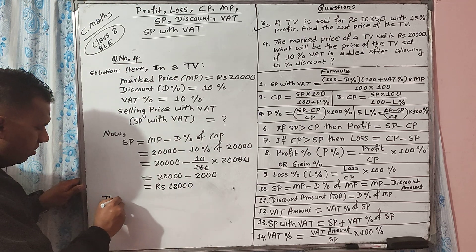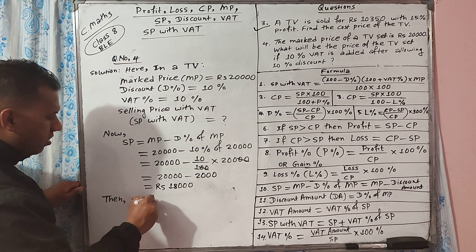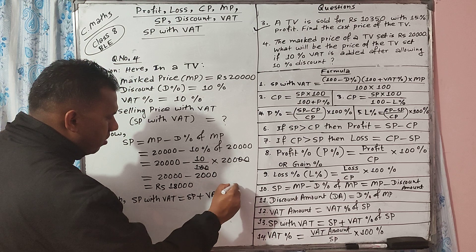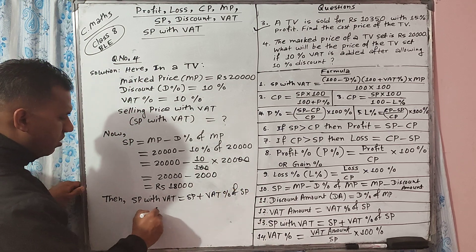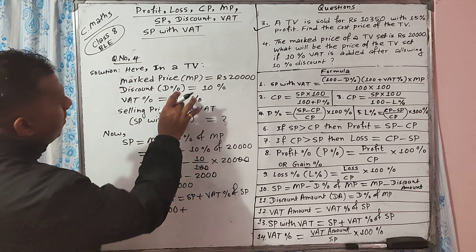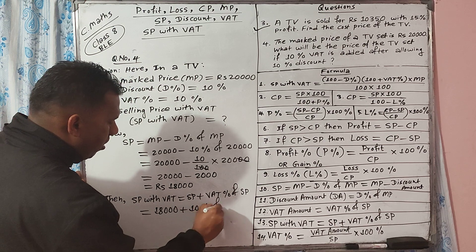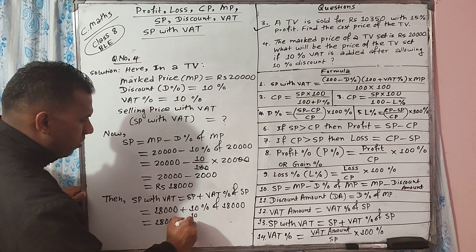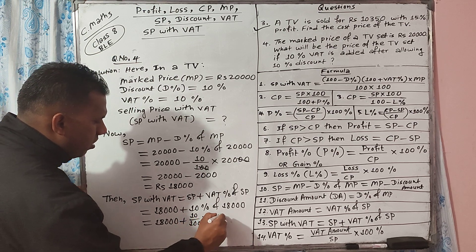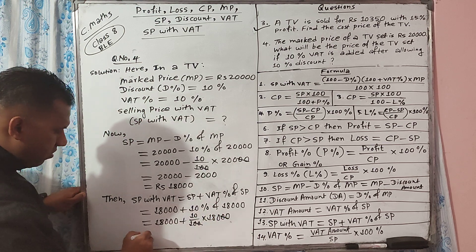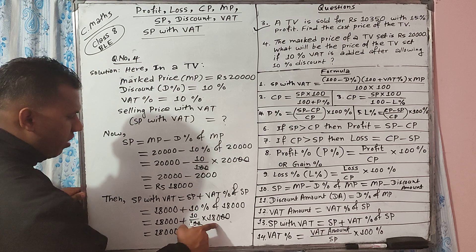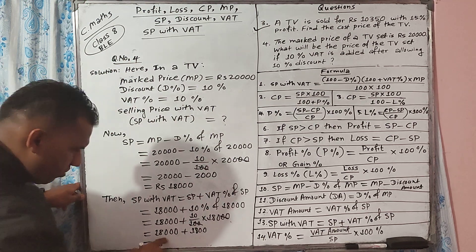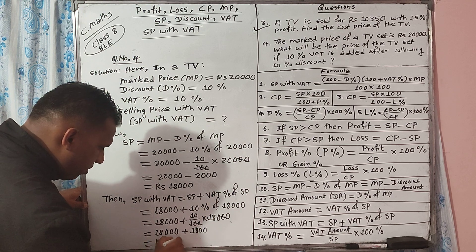After finding SP, we can calculate SP with VAT. SP with VAT equals SP plus VAT percent of SP. This equals 18,000 plus 10% of 18,000, that is 18,000 plus 10 upon 100 multiplied with 18,000. The zeros cancel, giving 18,000 plus 1,800, that is 19,800.